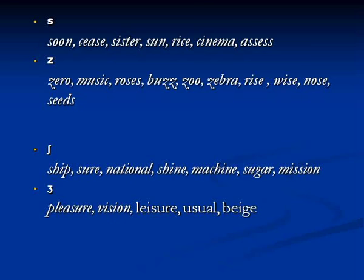The next pair is ʃ and ʒ. ʃ as in ship, sure, national, shine, machine, sugar, mission. ʒ as in pleasure, vision, leisure, usual, beige. ʒ is normally difficult for us because in Malayalam we don't have the sound ʒ.